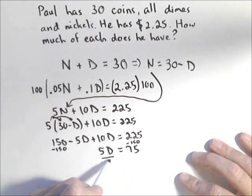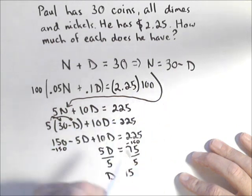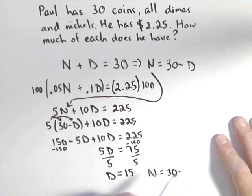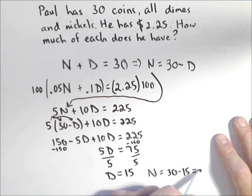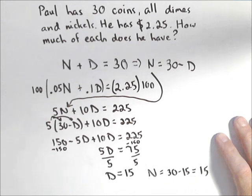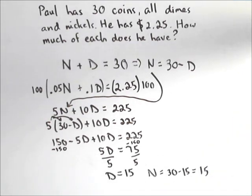Last step, the number of dimes is going to be 75 over 5, which is 15. To get the number of nickels, it's 30 minus the number of dimes, or 15. So 15 dimes and 15 nickels.